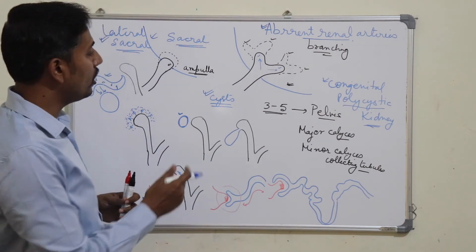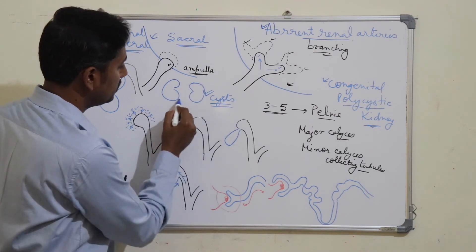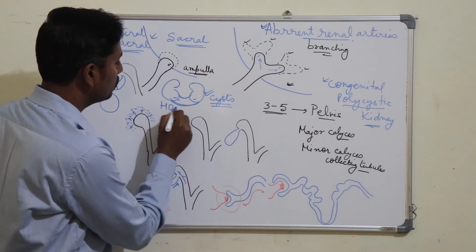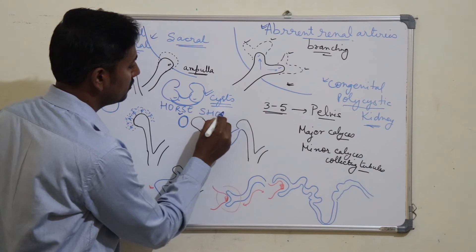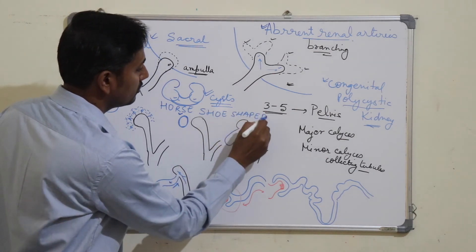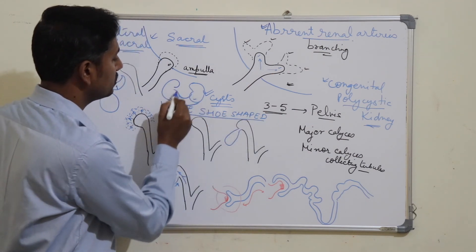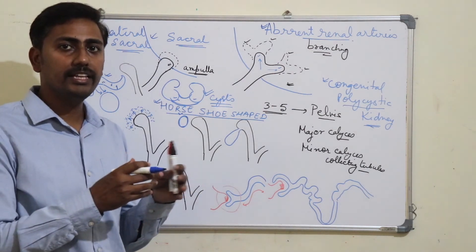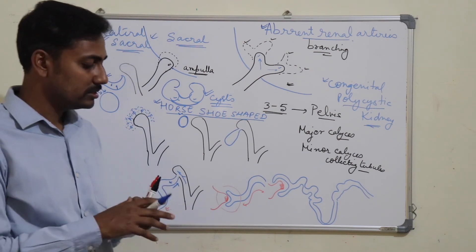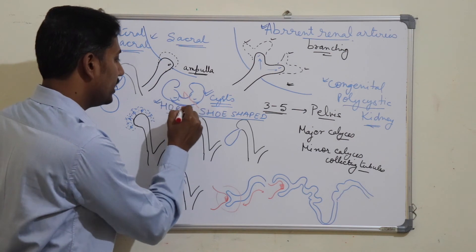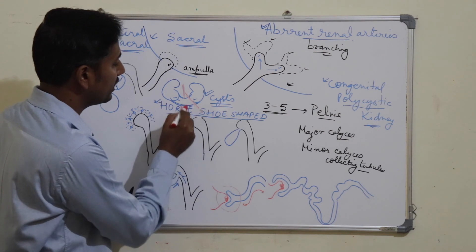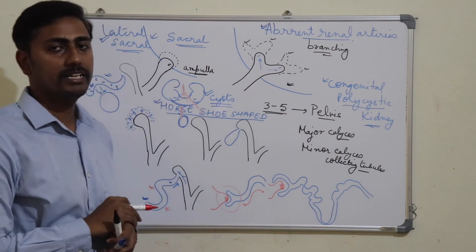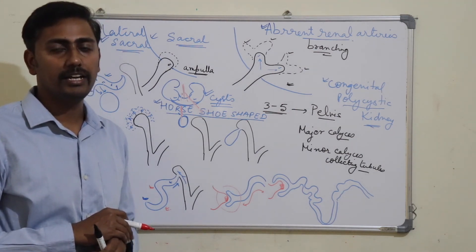Sometimes the lower poles of the two kidneys get fused together to form a horseshoe-shaped kidney. Since it looks like a shoe of the horse, it is known as a horseshoe-shaped kidney. A horseshoe-shaped kidney does not ascend above the level of the inferior mesenteric artery, because the inferior mesenteric artery will hinder its ascent. Therefore it does not go above the level of the origin of the inferior mesenteric artery. This concludes the development of the kidney and anomalies related to the kidney.